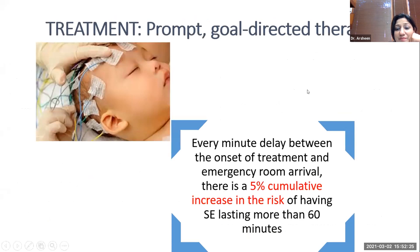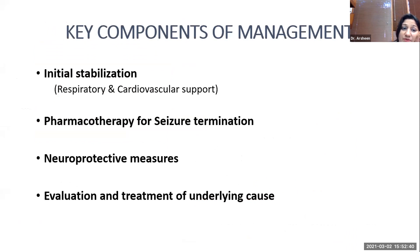Every minute delay between onset of treatment and emergency room arrival carries a five percent cumulative risk of status lasting more than 30 minutes. The aim should be prompt and goal-directed therapy. Key components of status management include initial stabilization with respiratory and cardiovascular support, pharmacological therapy for seizure termination, neuroprotective measures, and evaluation and treatment of the underlying cause.